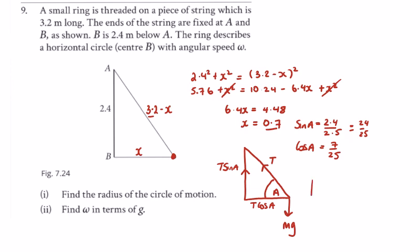Looking at forces up and forces down: mg equals T sine A, which is (24/25)T, giving 24T over 25. Rearranging, T equals 25mg over 24.